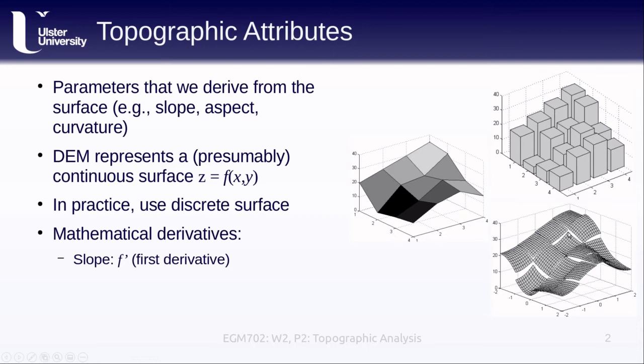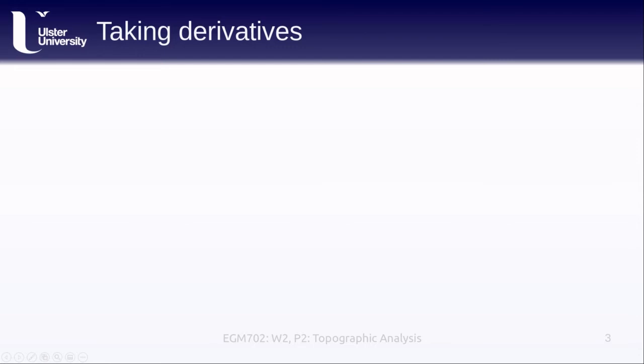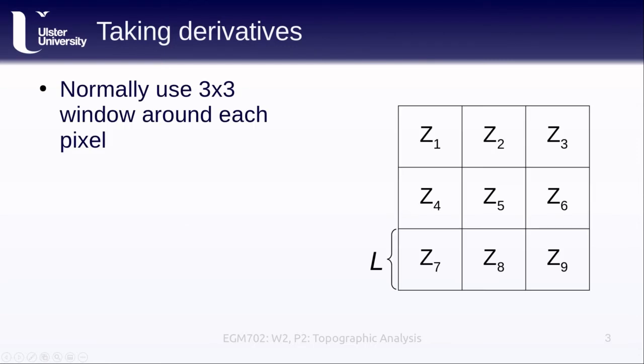These different surfaces all have mathematical derivatives. For example, we can think of the slope as being the first derivative of this surface. The curvature is the second derivative, and we usually don't work with higher order derivatives than that.